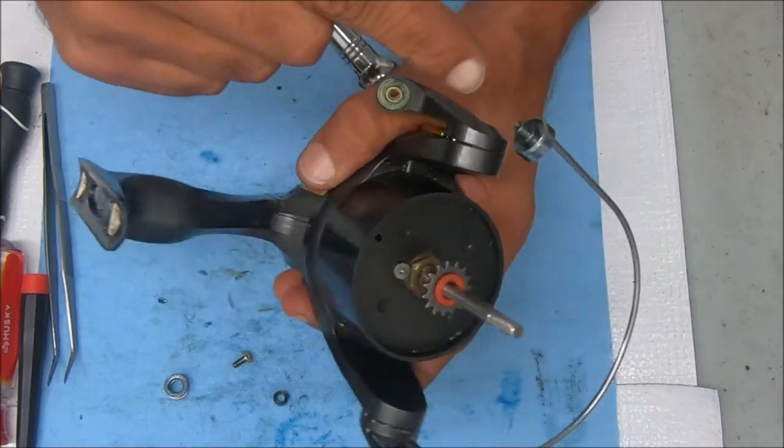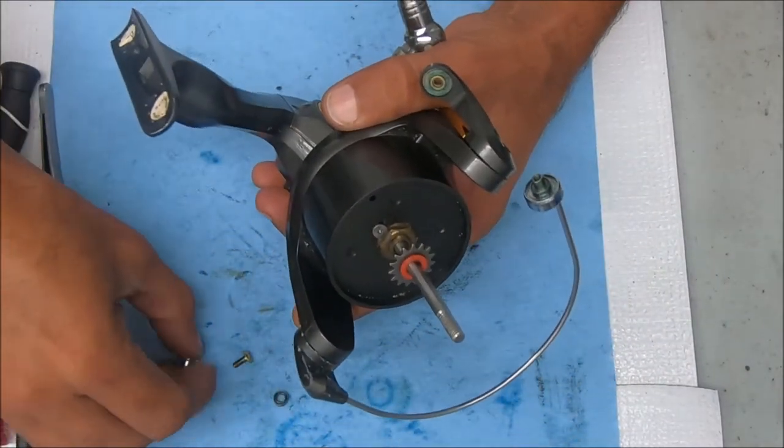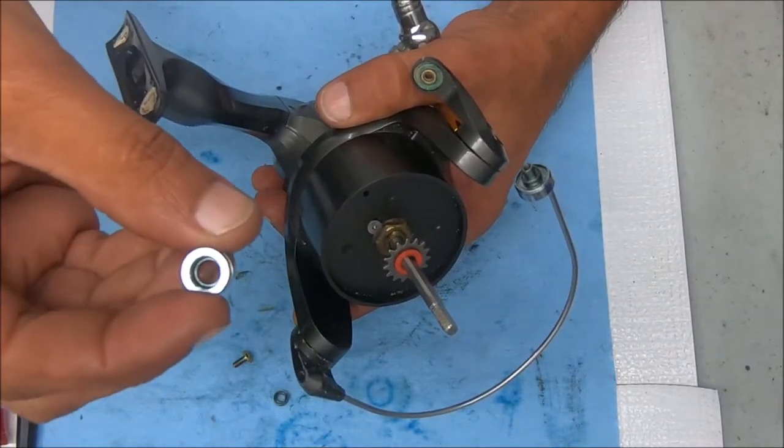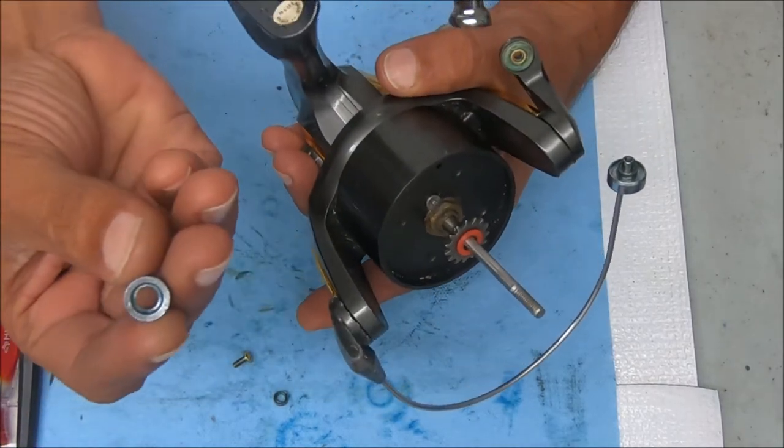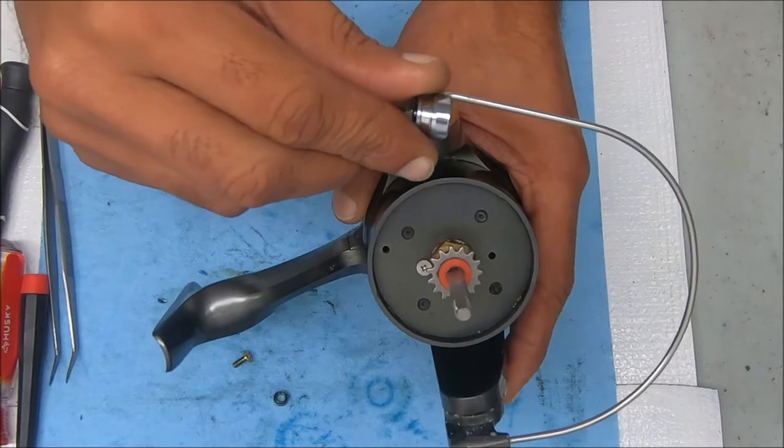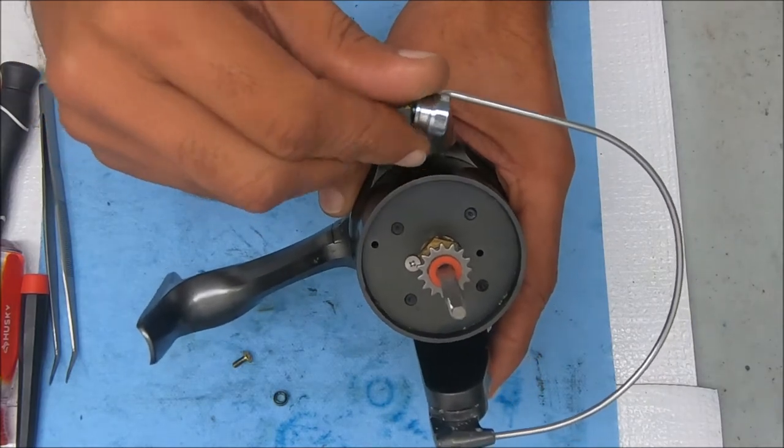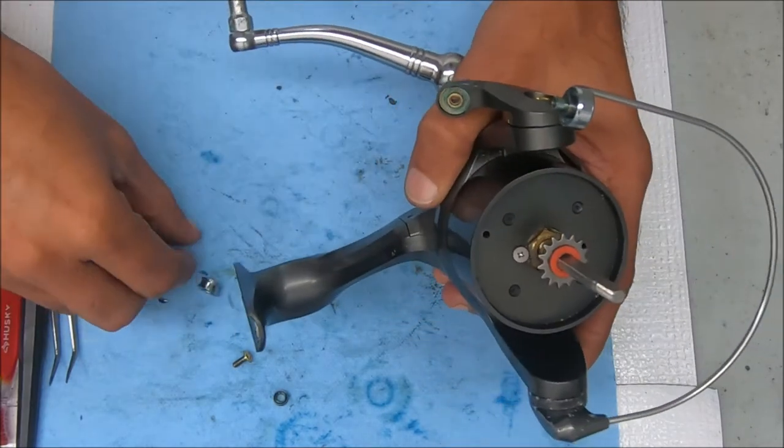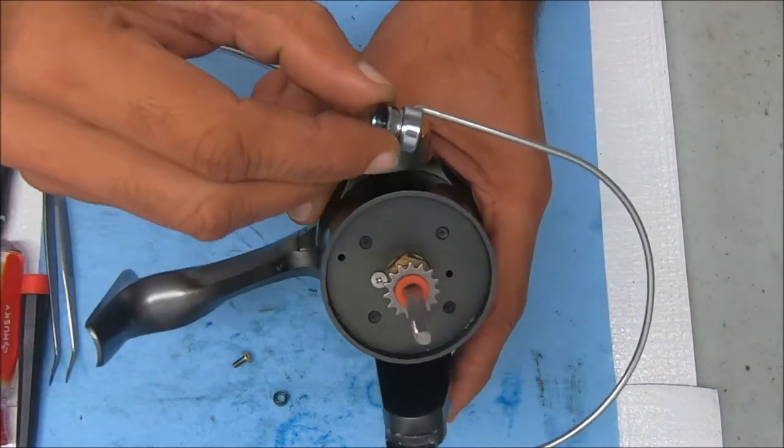That goes on there. And for the line roller, there's a deep portion or deep inset and a shallower inset. The shallower inset goes towards the bail arm so you don't hear any rubbing when you put it on there. If you put it the other way, you can hear some rubbing.